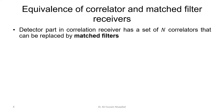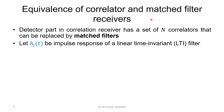Now let's discuss the equivalence of correlator and matched filter receivers. The detector part in the correlation receiver has a set of N correlators. Those correlators can be replaced with matched filters without losing anything, so we'd like to show the equivalence of a correlator to a matched filter.